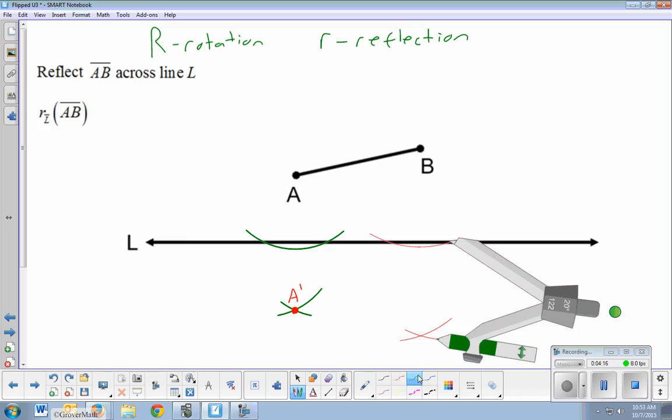There we go. That is B prime. And so then I just have to use my straight edge to connect them together to create a reflected image. That's it. So reflection constructions are pretty short and pretty easy.